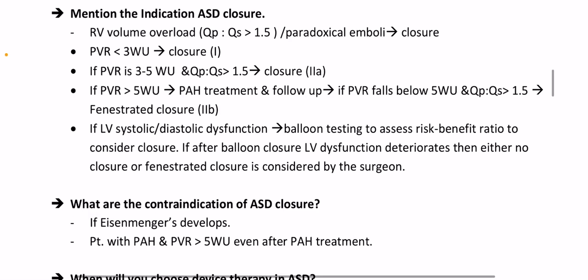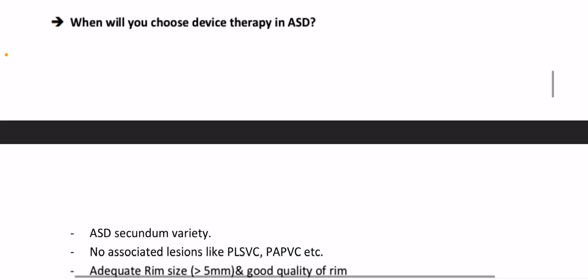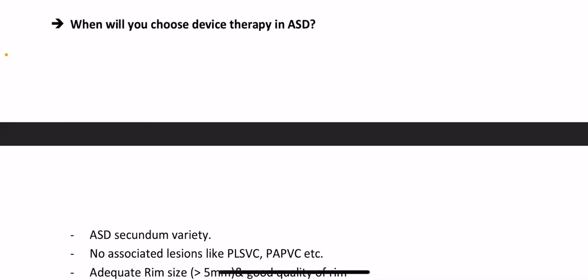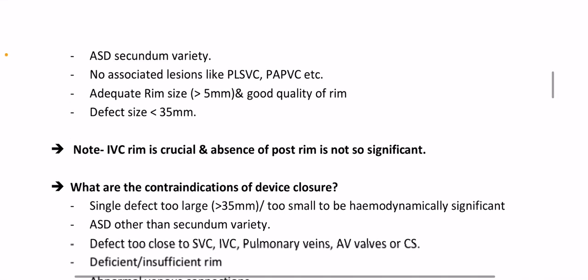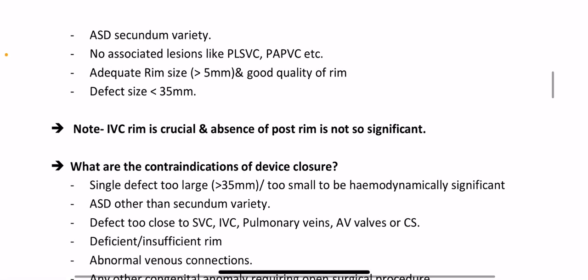When will you choose device therapy in ASD? In secundum ASD with no associated lesions such as PLSVC or PAPVC; adequate rim size more than 5 mm and good quality rim; defect size less than 35 mm. Note: the IVC rim is crucial, and absence of the posterior rim is not so significant.